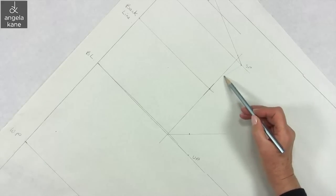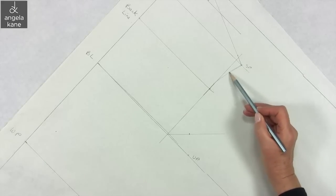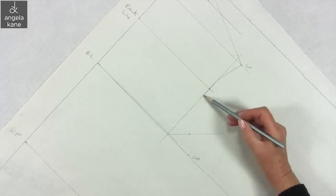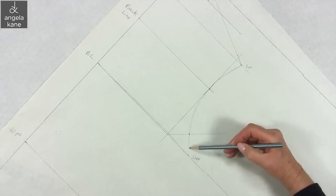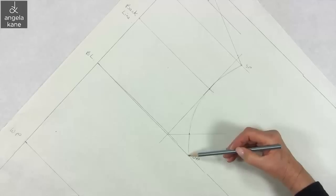So join SP to UP. The curve at UP will be quite shallow.